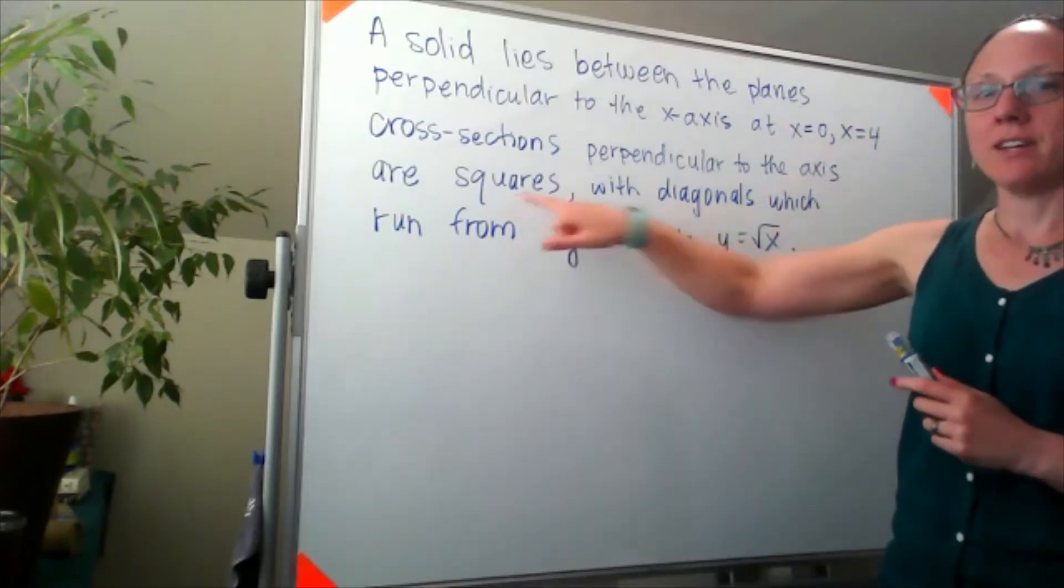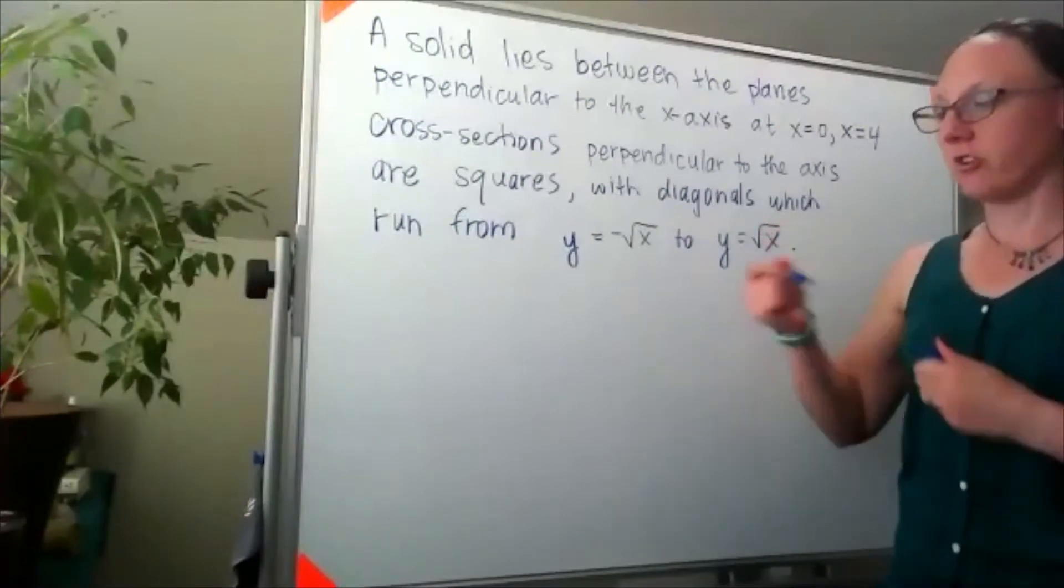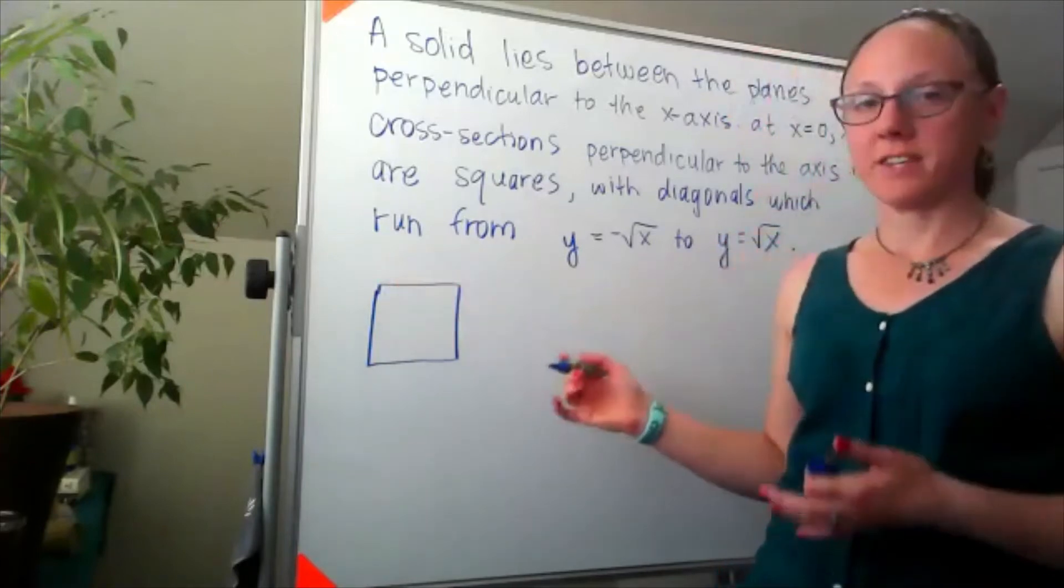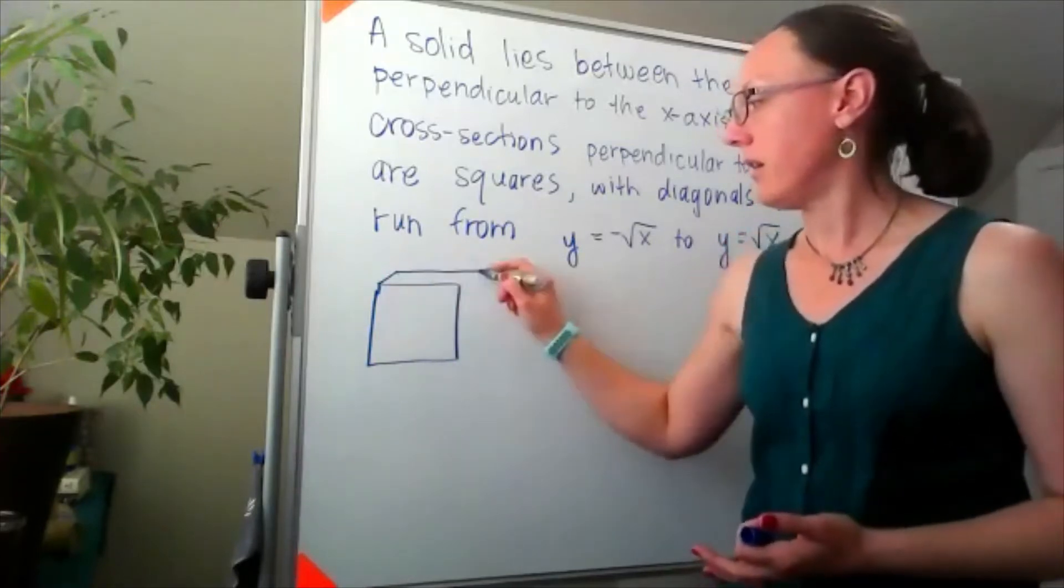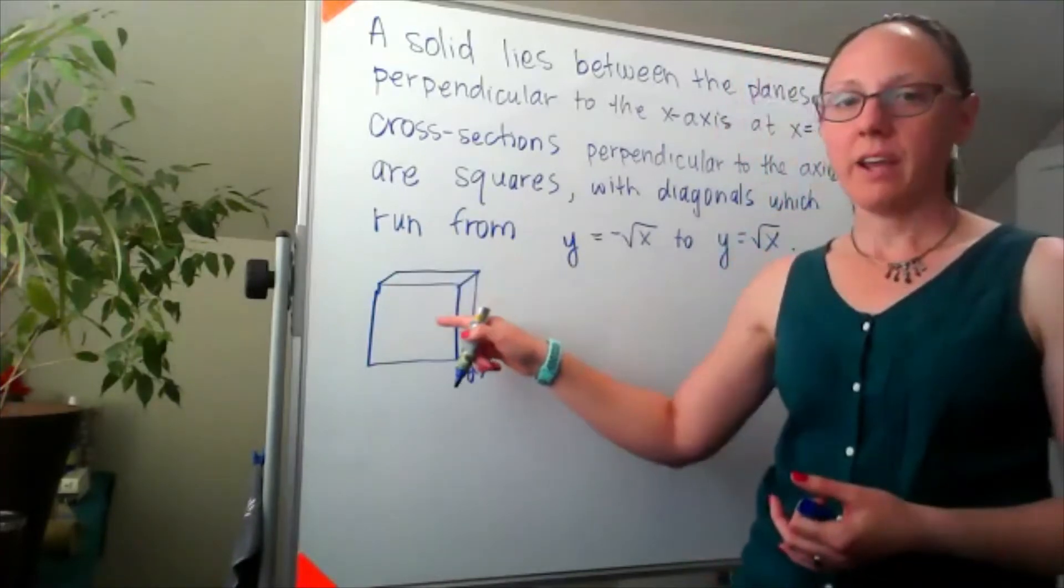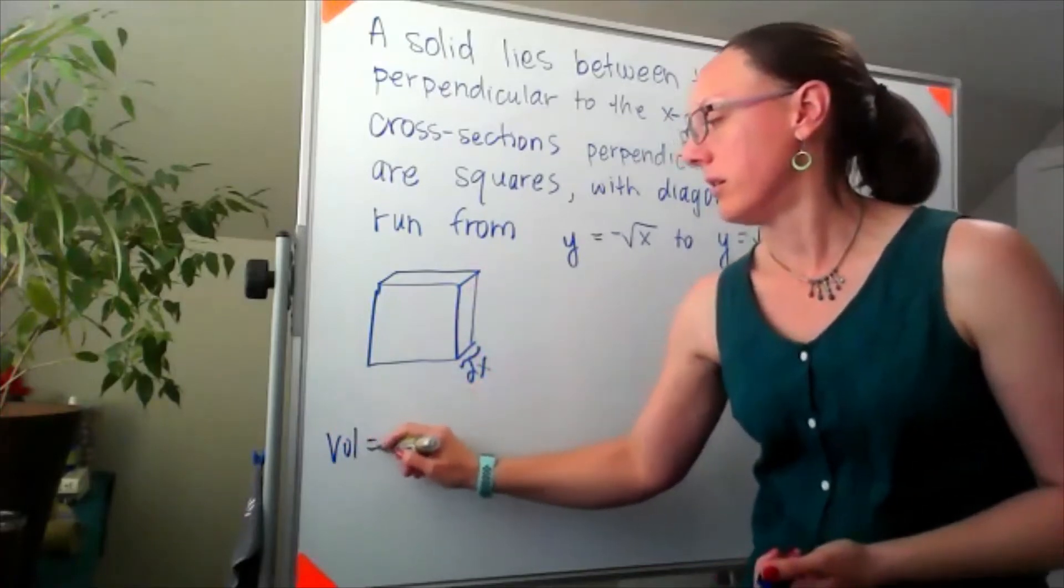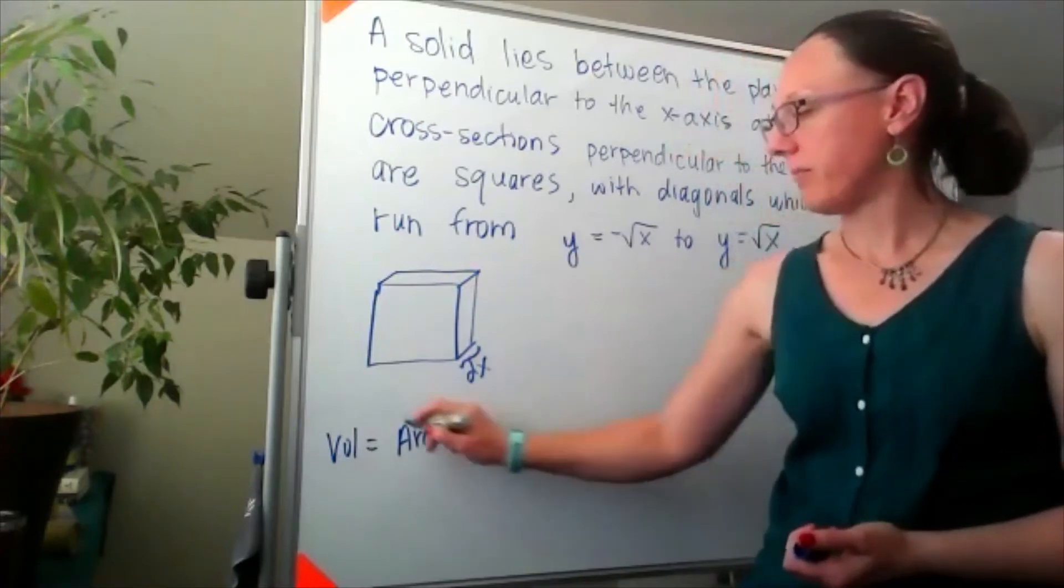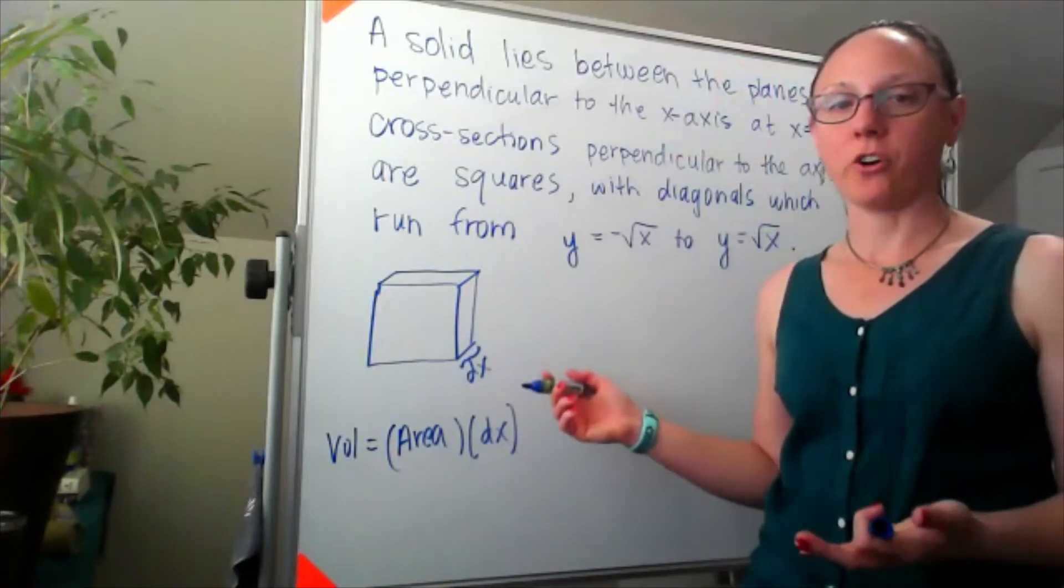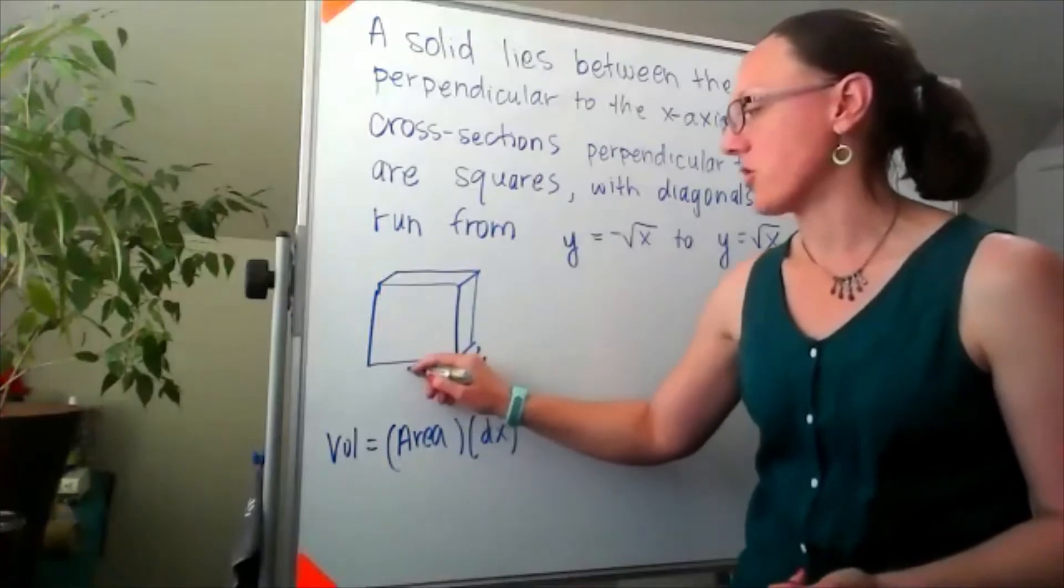We know there's squares. So if we're thinking about what that cross-sectional area is going to look like, we're going to have some sort of square with a thickness of dx, and that's going to make the cross-sectional volume the area of that square times dx. I'm going to label the size of this square, let's just call it s.